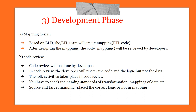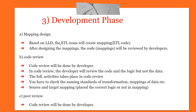The following activities take place in code review: checking the naming standards of transformations and mappings, verifying source and target mapping, and checking whether correct logic is placed in the mapping. Naming standards mean, for example, using 'M underscore' prefix for mappings and 'WF underscore' for workflows. Giving a proper name to each transformation is important — otherwise we cannot find which transformation corresponds to which code. This is called naming standards.